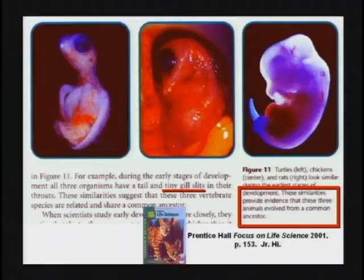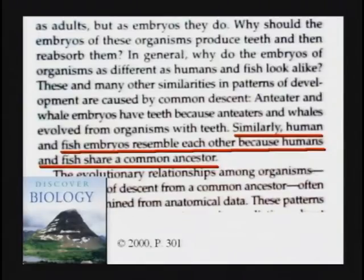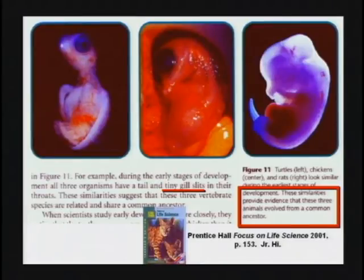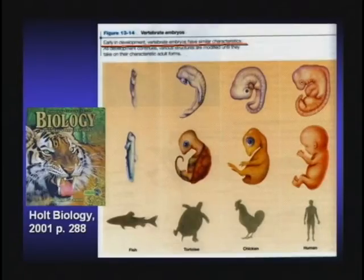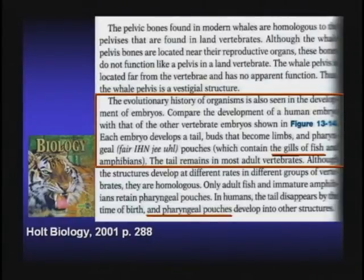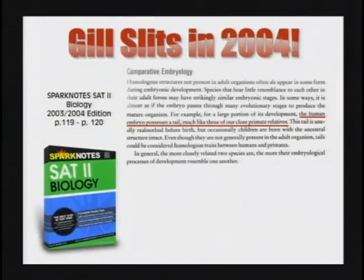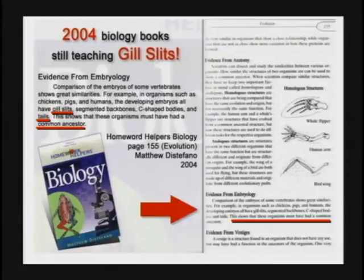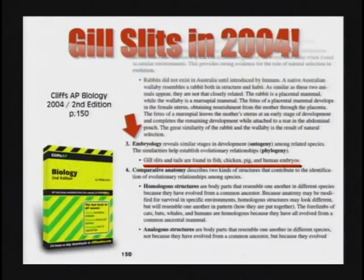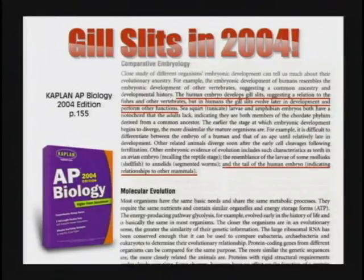Here's a junior high textbook telling kids the embryo has gill slits. This one says: similarly, humans and fish embryos resemble each other because humans and fish share a common ancestor. These similarities provide evidence that these three animals evolved from a common ancestor — tiny gill slits on the human embryo, gills of fish, tiny gill pouches. It's used in college textbooks. A 2004 textbook says it has evidence of evolution as seen in development of embryos. You can't get a high score on SAT or ACT tests unless you say the baby has gill pouches — it's found on every single test. If you don't believe in evolution, you won't score high enough to get into college.